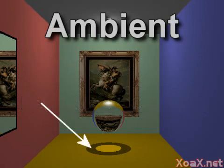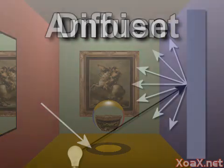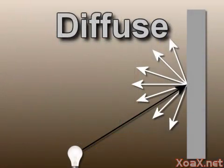The ambient term is used even in shadows like this one. The diffuse term represents light that comes directly from a light source and is emitted equally in all directions.